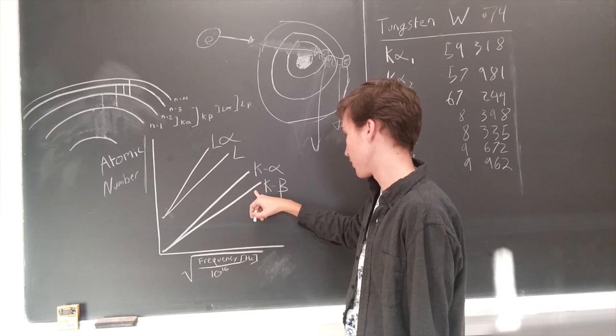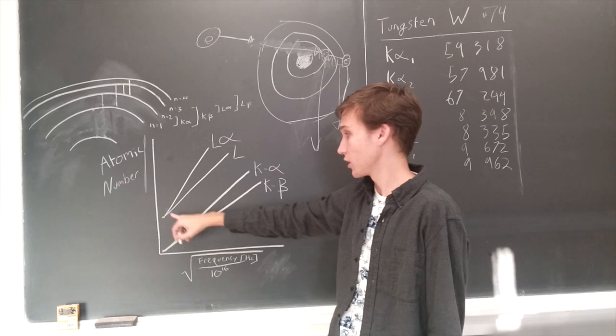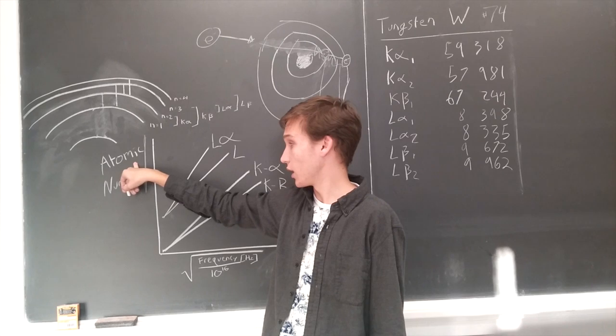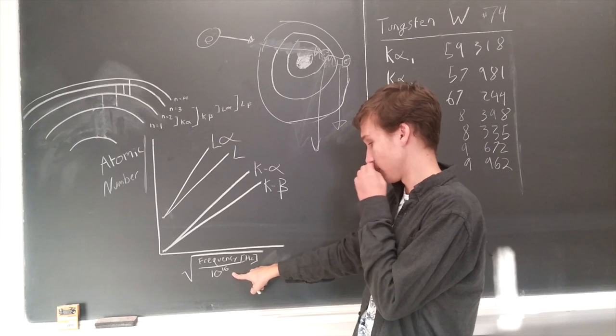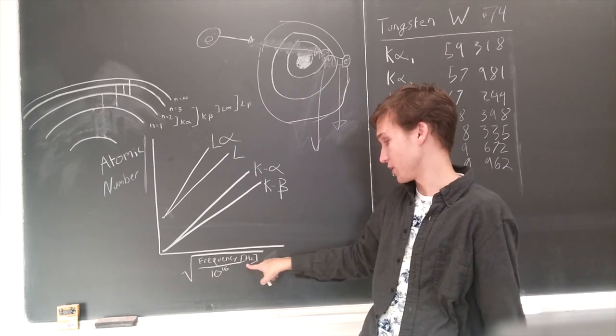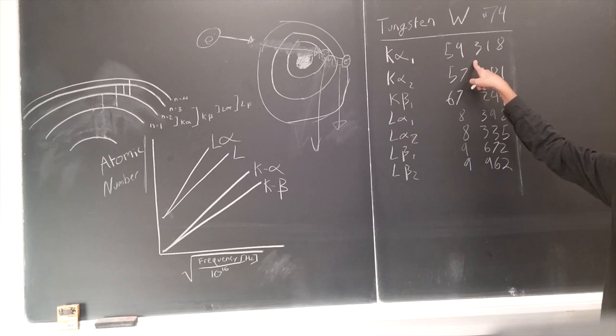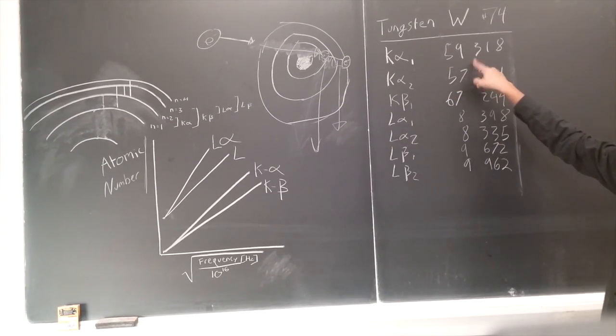The different frequencies of these different emission lines are detailed in the Moseley plot here, which I've sketched. On the vertical axis, we have atomic numbers so we can tell what different sources produce different energies because we can relate frequency to energy. And this is the horizontal axis, which I just said is frequency measured in Hertz over 10 to the 16th. And here we have data on the different energy levels of the x-rays produced by tungsten of different characteristics. For instance, the k-alpha has 59,318 electron volts, the k-alpha 2 has 57,000, etc.